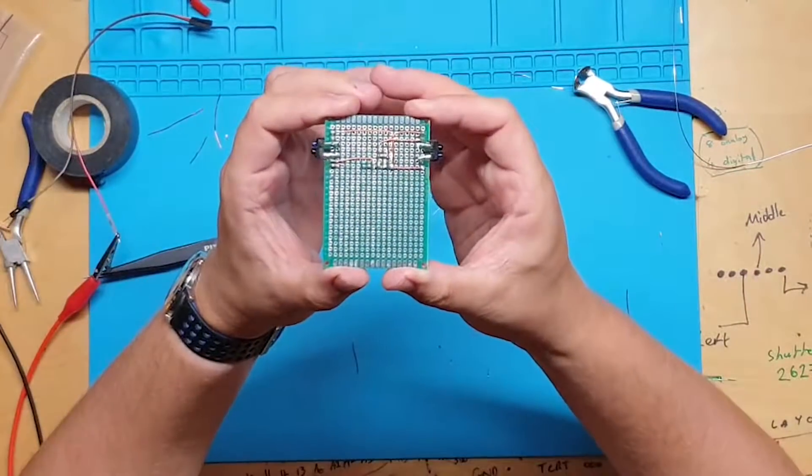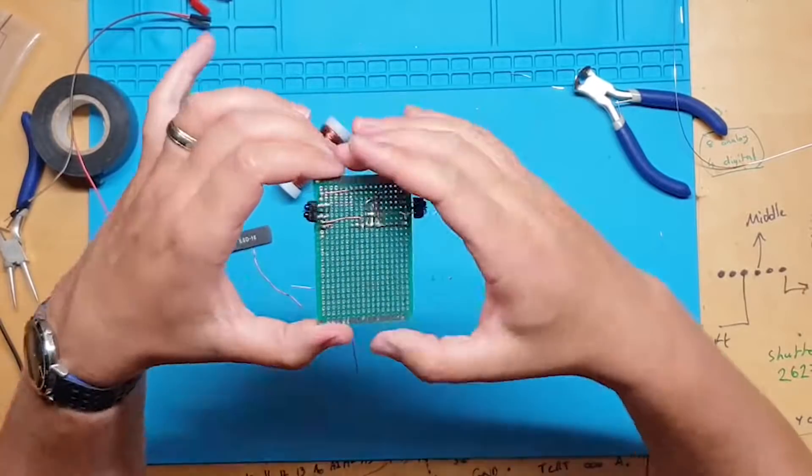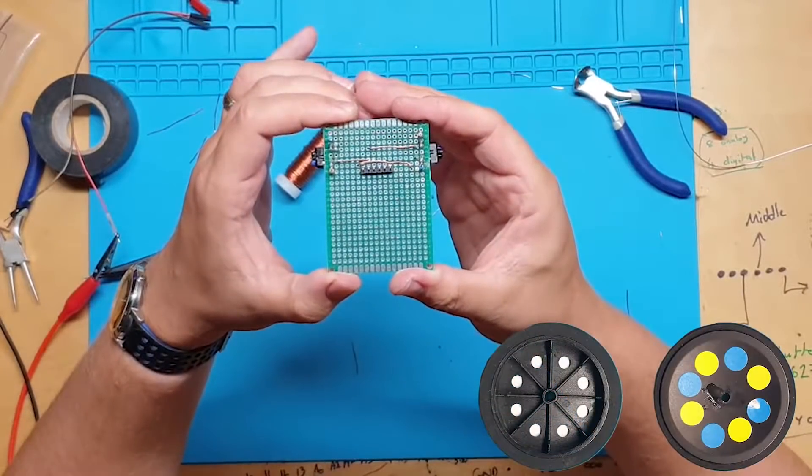Now we have tested the sensor board and we're happy that it works, we need to add the stickers to the wheel so we get reflected infrared when the wheels are rotated.